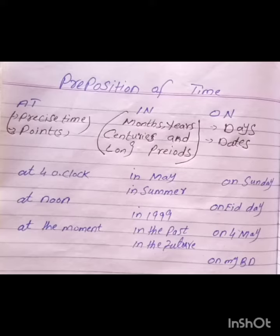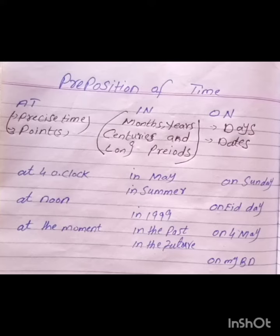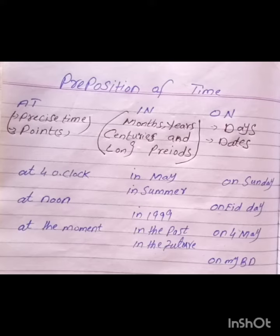Thirdly, we use 'on' with days. For example: on Sunday, on Monday, on Tuesday, and each day. We also use 'on' with dates. For example: on 4th May, on 6th May, on 25th December.